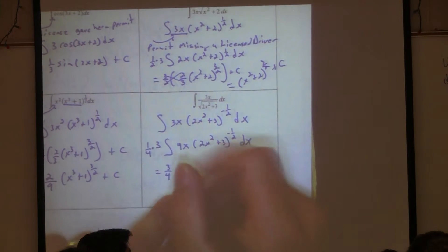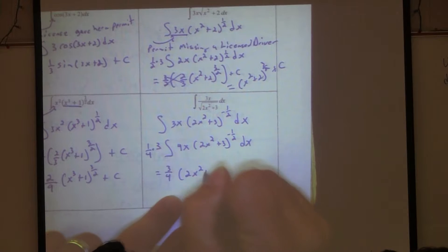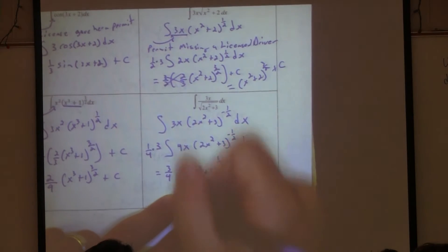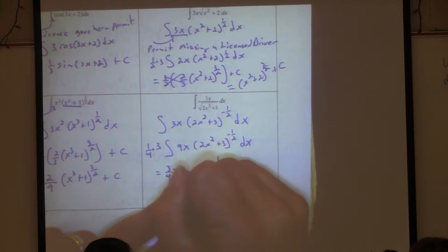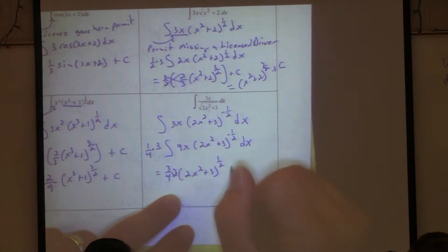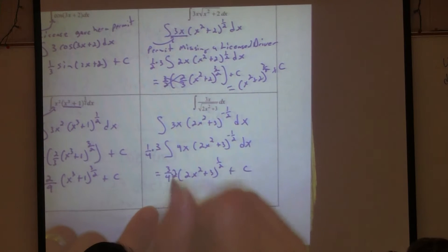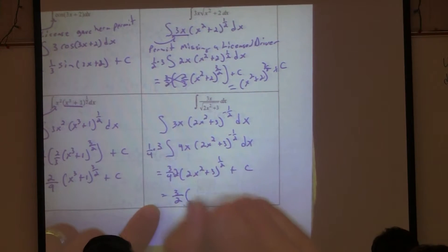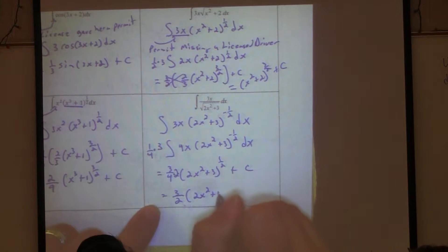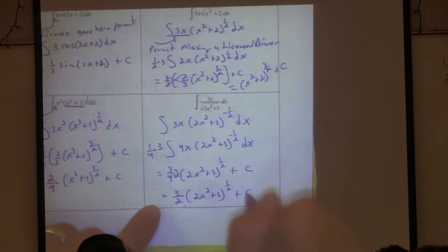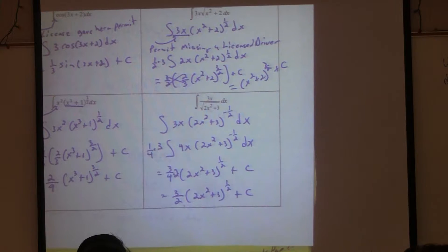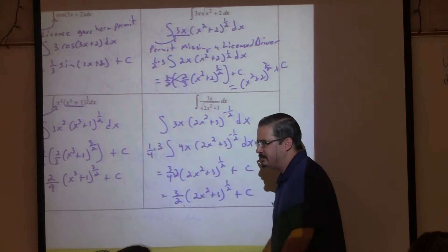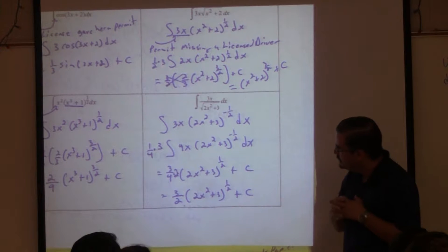So add 1. So we get 2x squared plus 3 to the half. Divided by half, which is really times what? Times 2. Plus the C. So what do we end up with over here? 3 over 2 times 2x squared plus 3 to the half plus C. What do you think? Is this cool? Makes your life a little bit easier? Yeah.